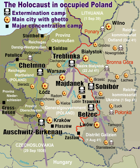The estimated total number of people executed in the Nazi extermination camps is over 3 million.